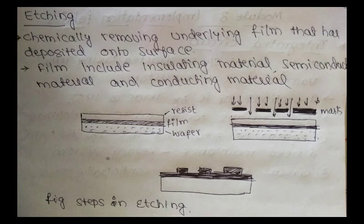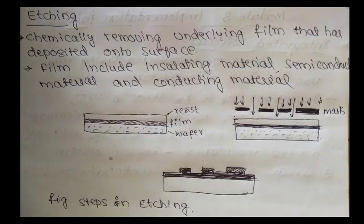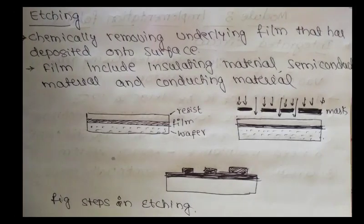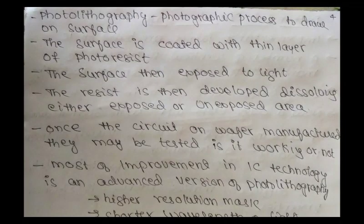Once the circuits on a wafer have been manufactured, they must be tested to determine which ones work and which fail. The IC foundries are meticulous in their cleanliness. The resist is then developed, dissolving either the exposed area or the unexposed area. Most improvement in IC technology is attributed to advances in photolithography, including higher resolution masks and shorter wavelengths.